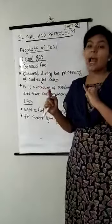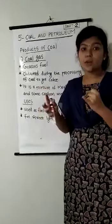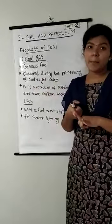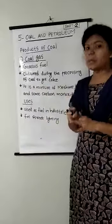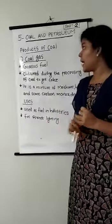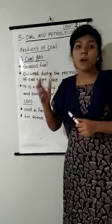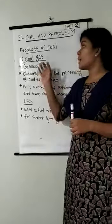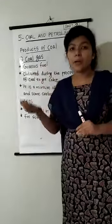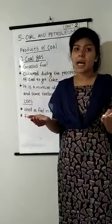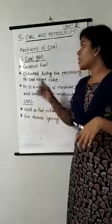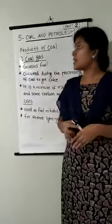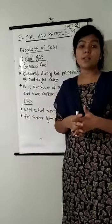Coal gas is a gaseous fuel obtained during the processing of coal to get coke. It is a mixture of several gases like methane, hydrogen, and some carbon monoxide. Coal gas is mostly used as a source of heat. When coal gas is burned, a good amount of light and heat are produced. In earlier days, coal gas was used for street lighting, but nowadays it is mostly used as a source of heat.